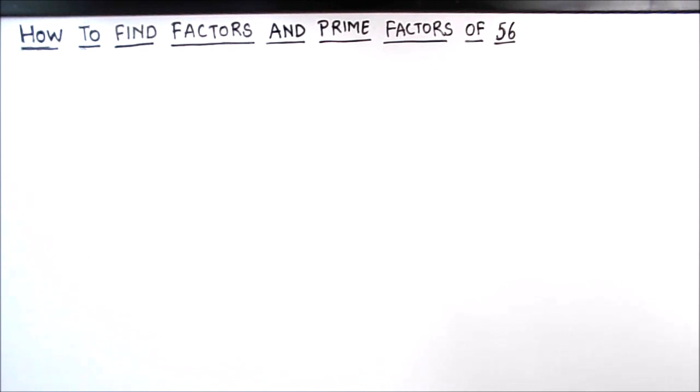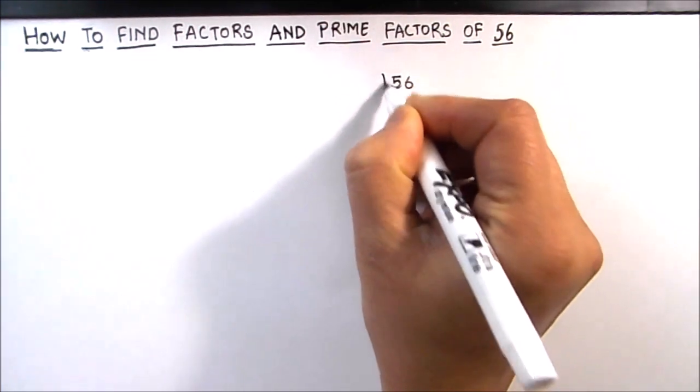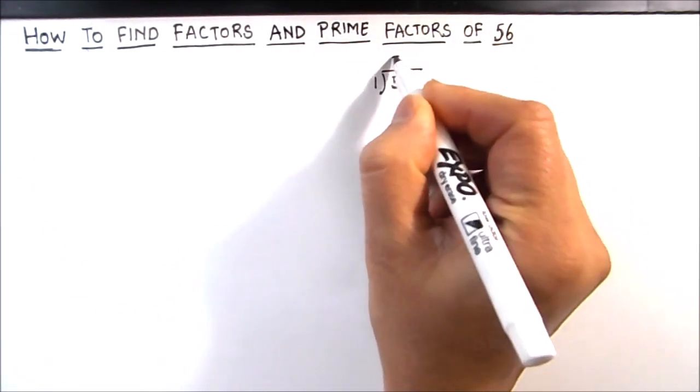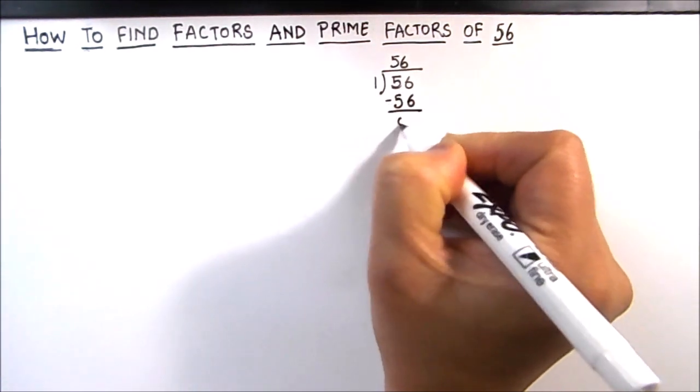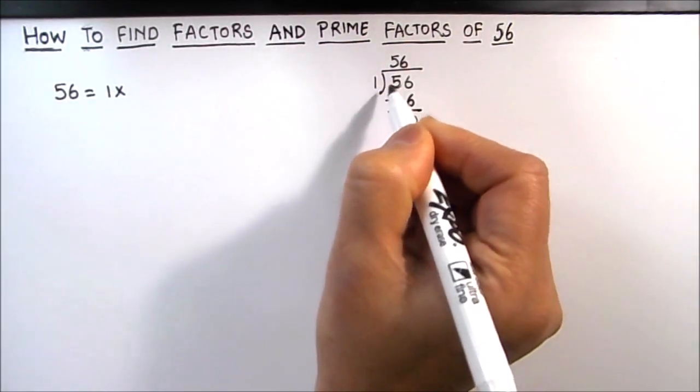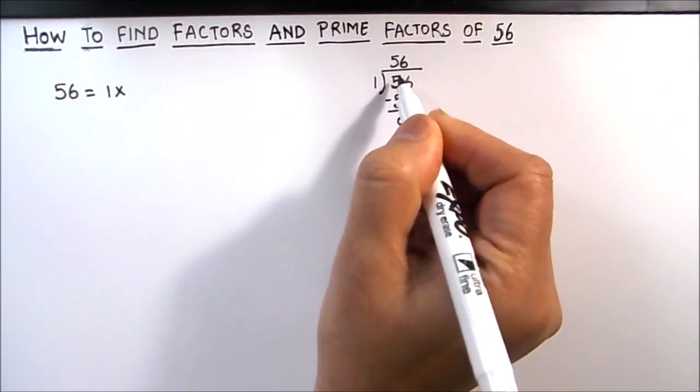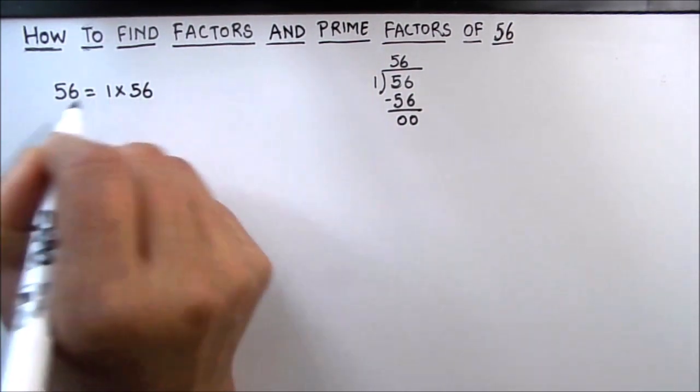If 56 is fully divisible, that means the number is a factor of number 56. So let's start by dividing 56 by number 1. 56 divided by 1 is 56 and we got 0 remainder, so 1 is a factor of number 56. We get two factors from this division as 1 and 56. We are going to write the factors in pairs as 1 times 56 is 56.